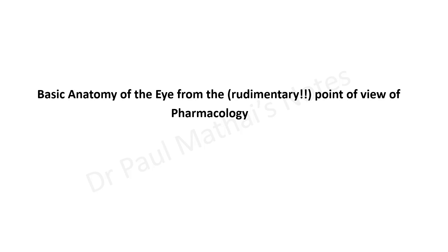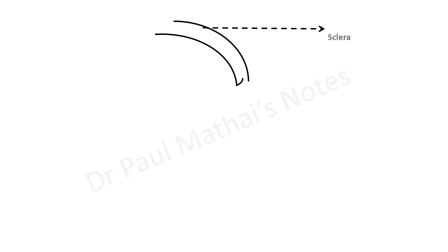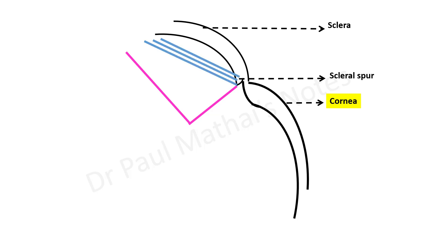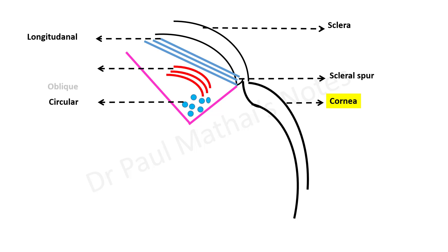To understand the ophthalmological indications of atropine, we need a basic knowledge of eye anatomy from a pharmacological perspective. What you are looking at is a cut section of the eye showing the sclera with the scleral spur, and the cornea. This triangular structure — triangular on cut section — is the ciliary body, which consists of ciliary muscles arranged in three fibers: the longitudinal fibers, the circular fibers, and the oblique fibers of the ciliary muscle.